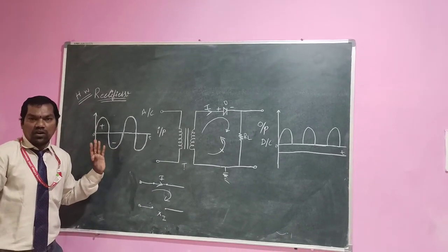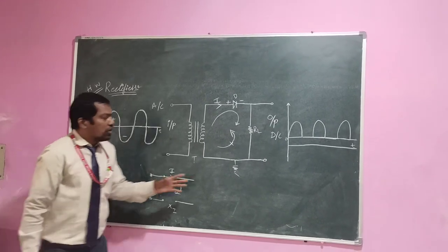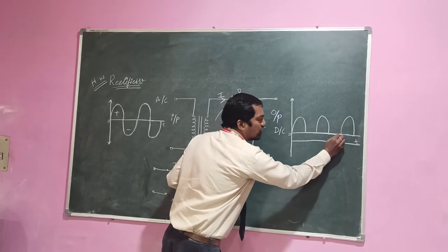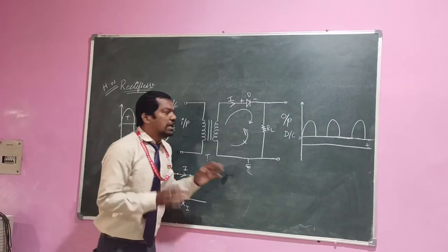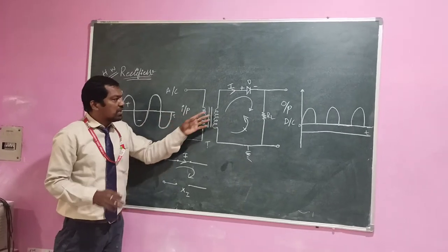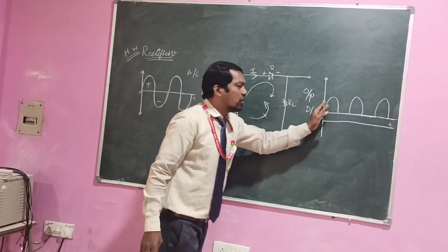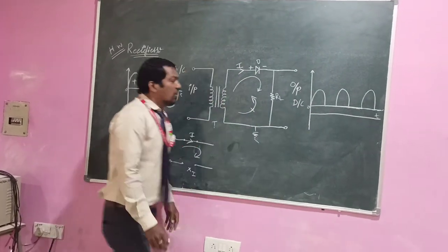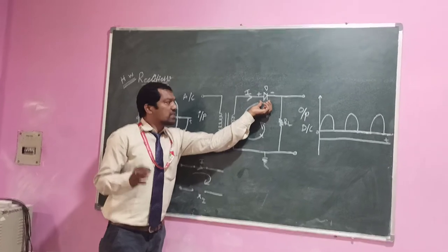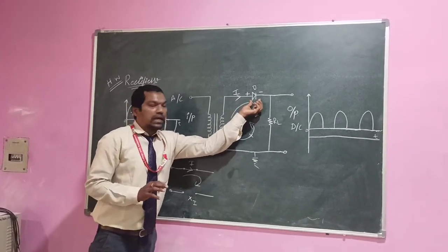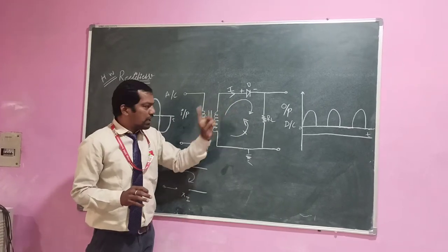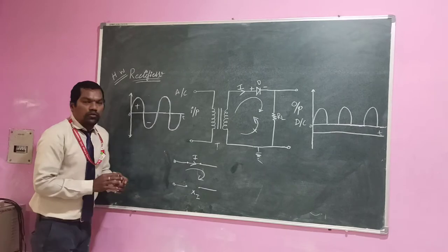Efficiency is very less for the half wave rectifier. For negative cycles, it totally becomes zero. Next, coming from negative cycles to positive cycles, it will repeat. We will get the pulsated DC voltage. Finally we will get the output. The diode is acting as a rectifier. In the half wave rectifier, we use only one transformer and a single diode. This is the half wave rectifier operation.